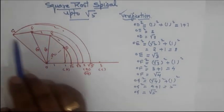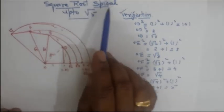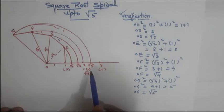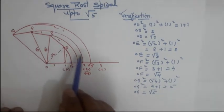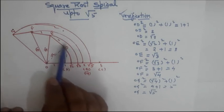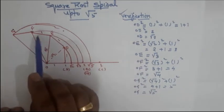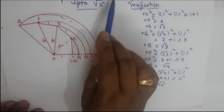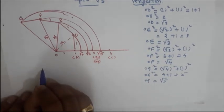One more important thing: the arcs drawn to the number line are important only when you also need to represent the values on the number line. If you are asked to both make the square root spiral and represent √2, √3, √4, √5 on the number line, then those arcs are essential.